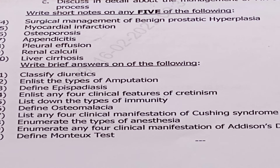Short notes: Question 4: surgical management of benign prostatic hyperplasia. Question 5: myocardial infarction. Question 6: osteoporosis. Question 7: appendicitis. Question 8: pleural effusion. Question 9: renal calculi. Question 10: liver cirrhosis. Brief answers: Question 11: classify diuretics. Question 12: enlist types of amputation. Question 13: define epispadias. Question 14: enlist any four clinical features of cretinism. Question 15: list types of immunity. Question 16: define osteomalacia. Question 17: list any four clinical manifestations of Cushing syndrome. Question 18: enumerate types of anesthesia. Question 19: enumerate any four clinical manifestations of Addison's disease. Question 20: define Mantoux test.